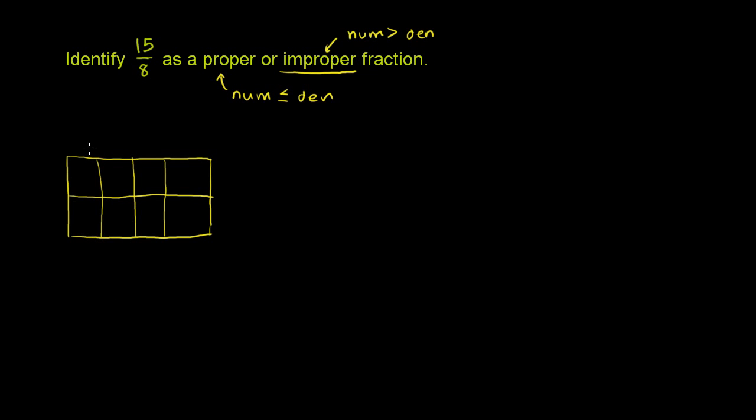Now, what does 1 of these boxes represent? What does that box right there represent? Well, this is 1 of the 8 total pieces of pie. So this represents 1 eighth.